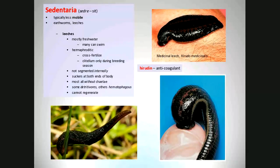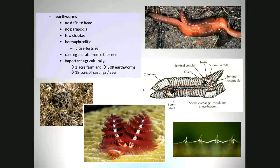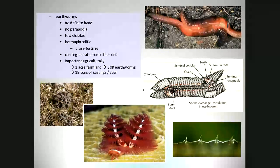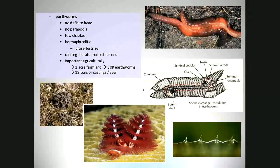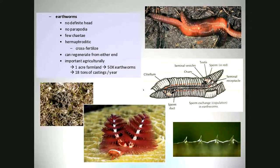The sedentary group — earthworms — have no definitive head, no parapodia, and do have chaetae but just a few. Earthworms are hermaphroditic cross-fertilizers. Two hermaphroditic earthworms lay side by side and cross-fertilize each other to maintain diversity. When you're a relatively simple organism, you can regenerate from either end — cut off the end of an earthworm and it grows back. An acre of farmland will have 50,000 earthworms producing 18 tons of castings. Castings are what we call cleaned dirt — the earthworm takes in dirt, extracts nutrients, and passes the dirt out. The holes earthworms make aerate the soil, which is good for crops. Charles Darwin wrote a whole book about earthworms and their importance in agriculture.